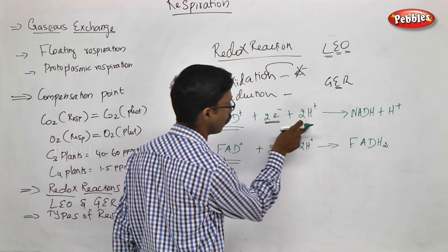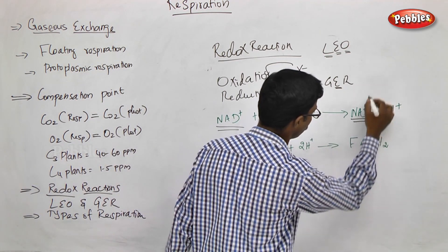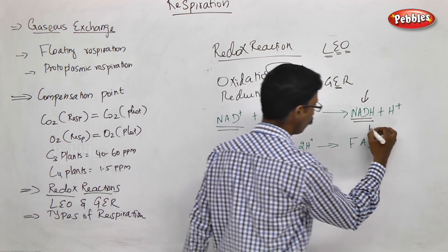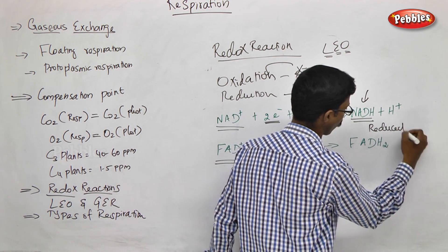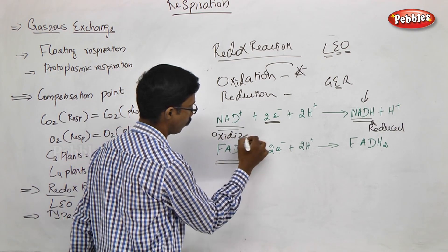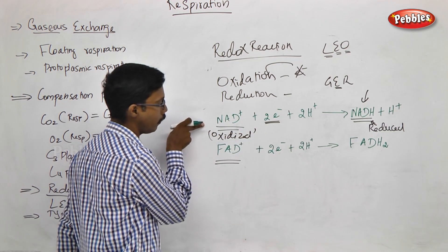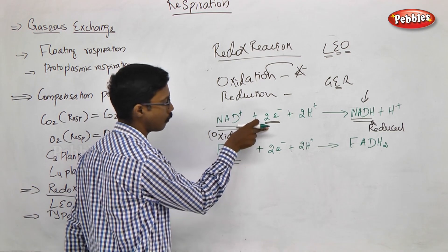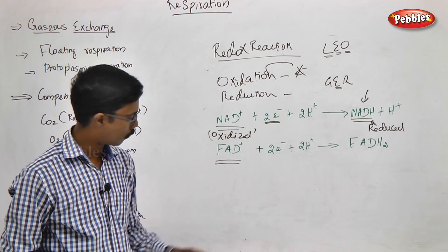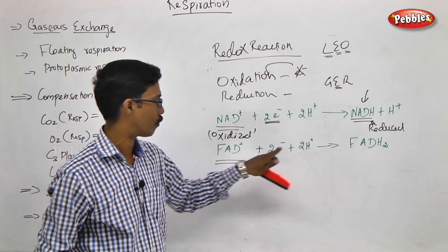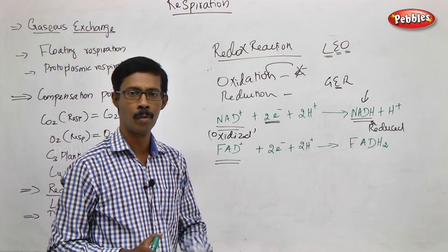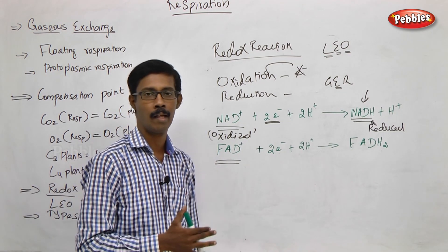It will accept electrons along with protons and form the structure called NADH. This is the reduced state. The oxidized state is NAD+. In the oxidized form, electrons are accepted and it becomes reduced — this is what is called a redox reaction.